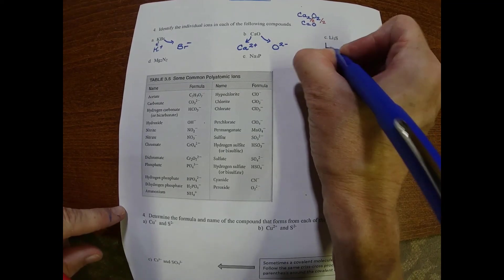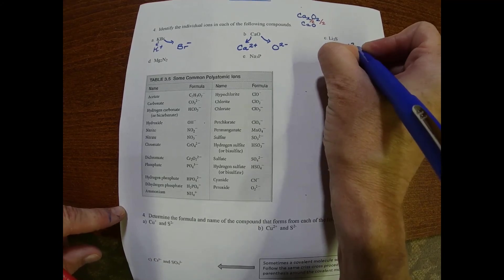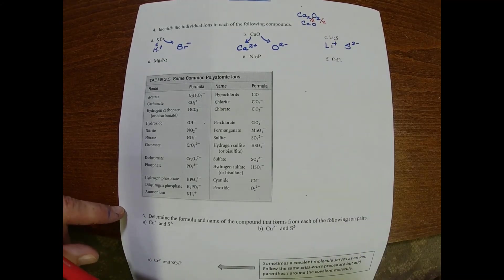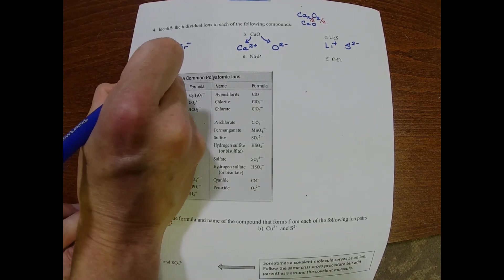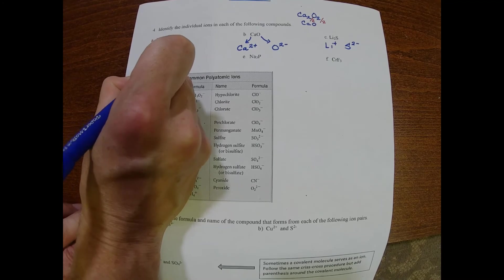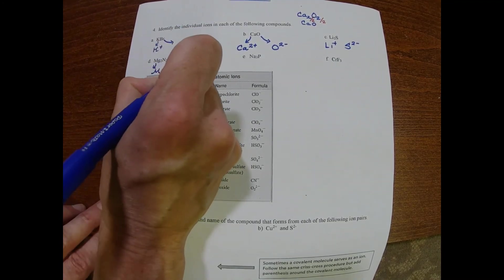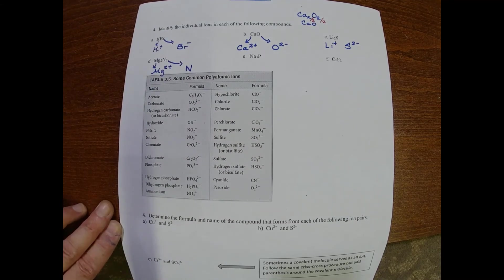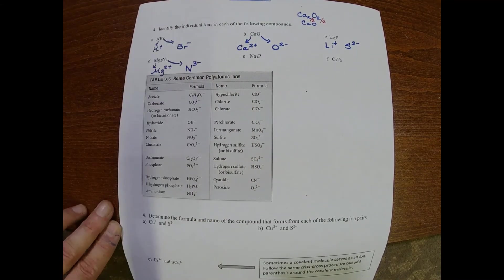Lithium - lithium is in group 1 so I'll do a +1 on that and sulfur is in group 6 so I'll do a 2- there. Magnesium is in group 2 so I'll do a 2+ on our magnesium. And nitrogen is in group 5A so nitrogen has a -3 charge.